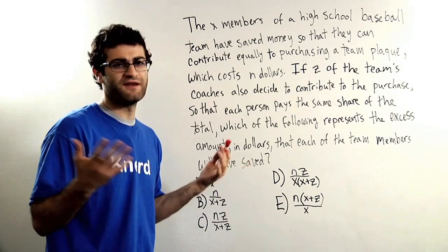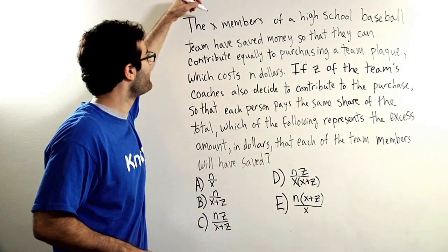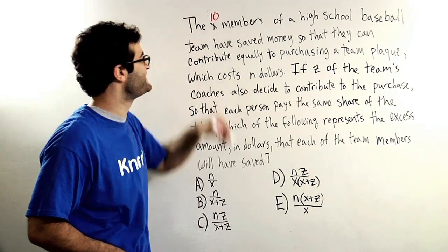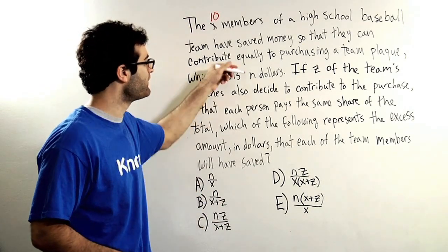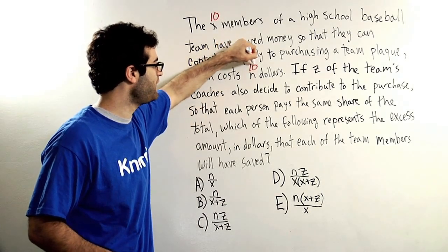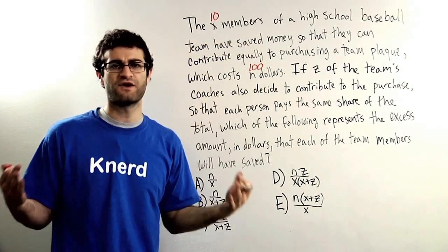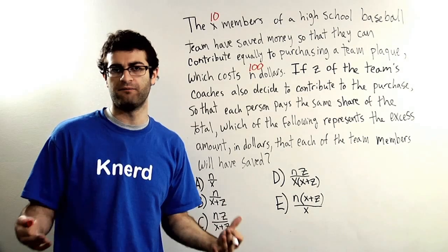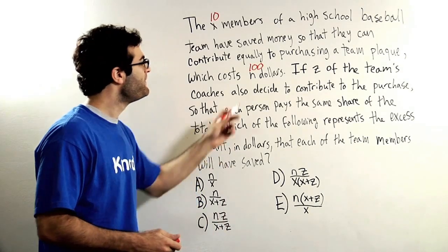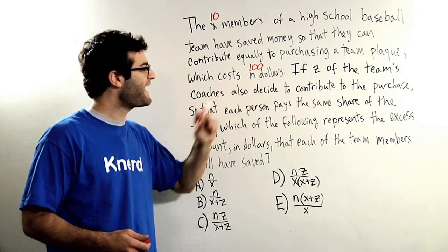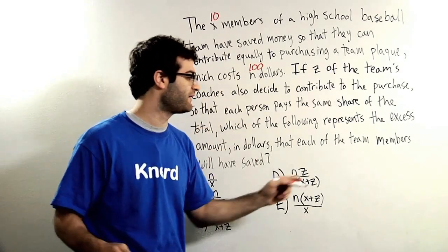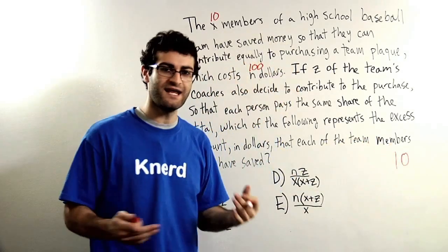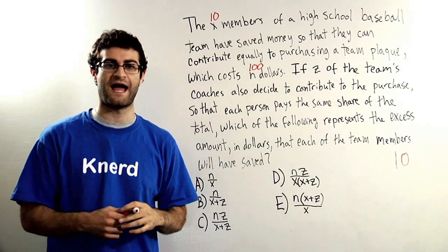So let's use numbers that don't necessarily have to be realistic, but let's say that there are X team members, let's say there are 10, 10 members on the baseball team. And they're going to buy a plaque for N dollars, let's call it $100. The numbers aren't necessarily realistic, but they are helpful for my own purposes right here because I can do this in my head. The plaque costs 100, there's 10 of them, they're each going to spend $10. So each player on the team has saved $10 in order to contribute to the plaque.